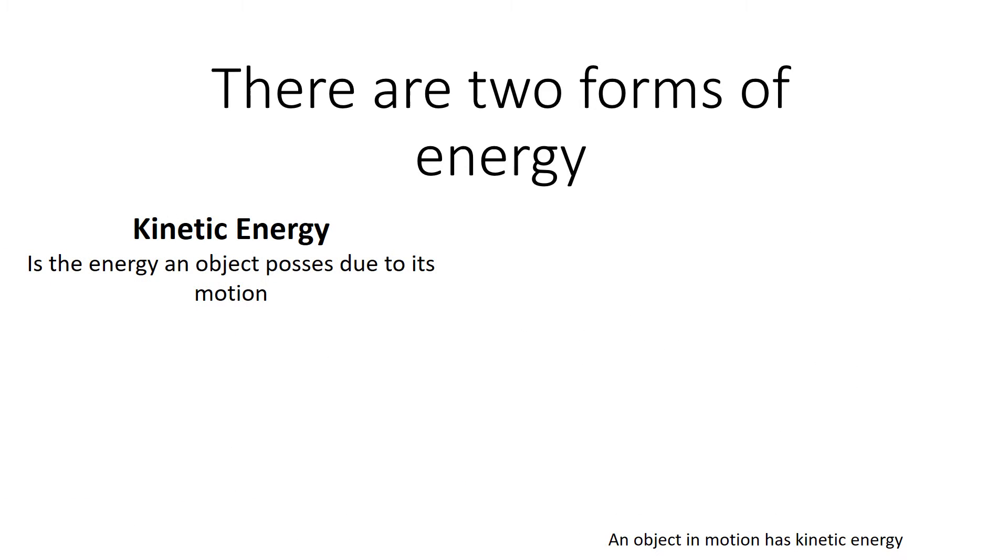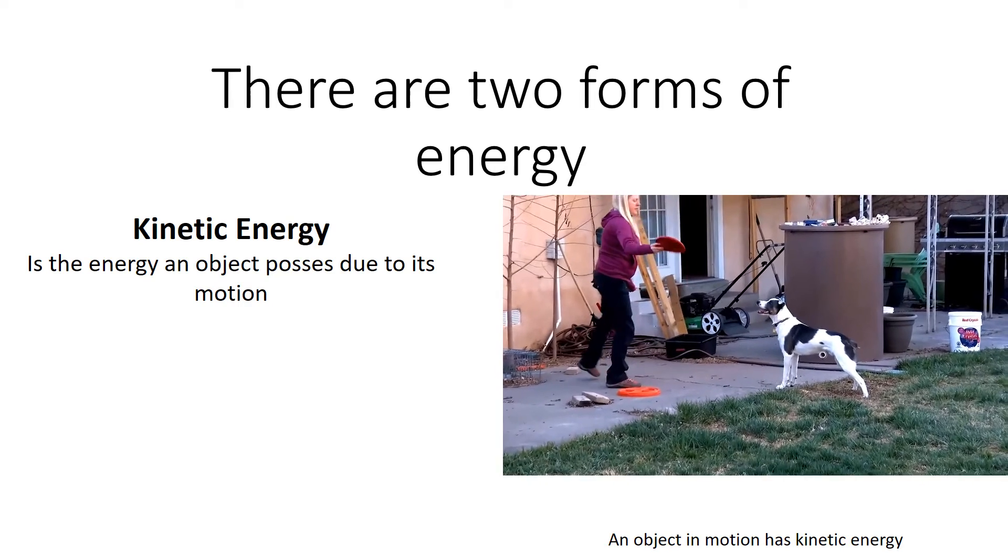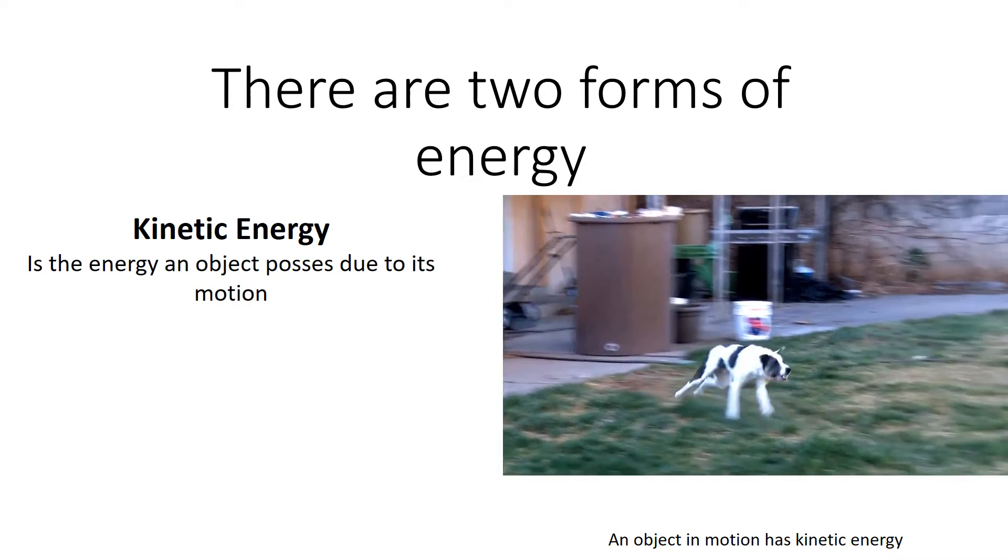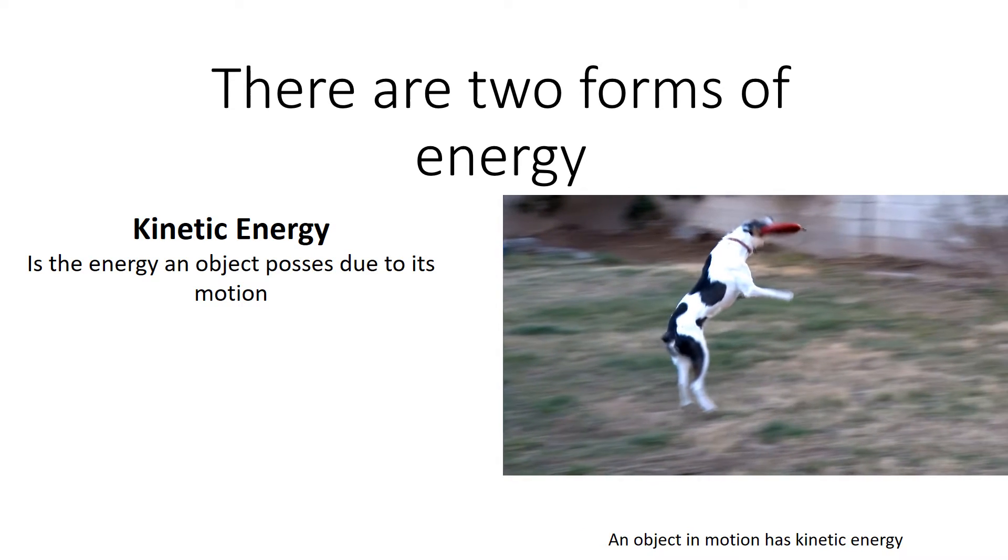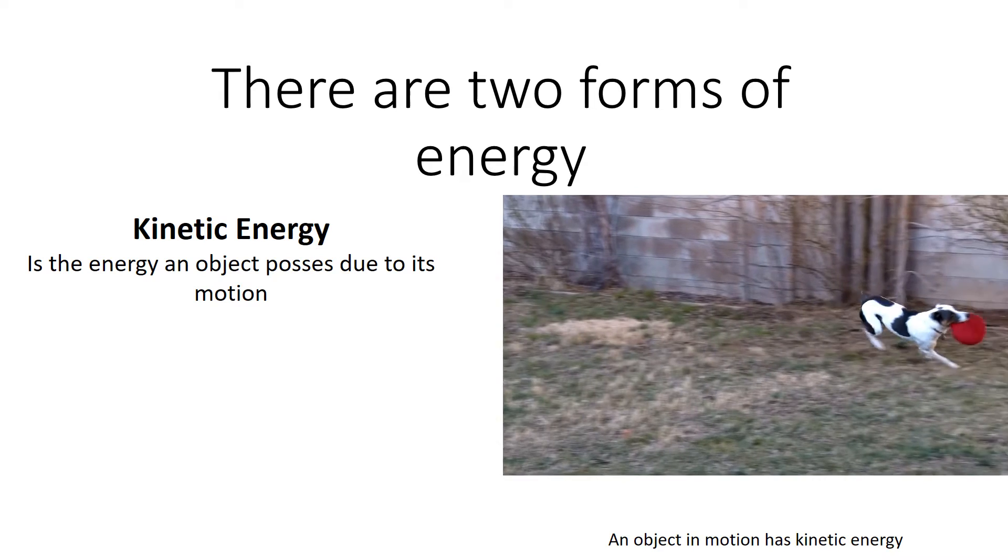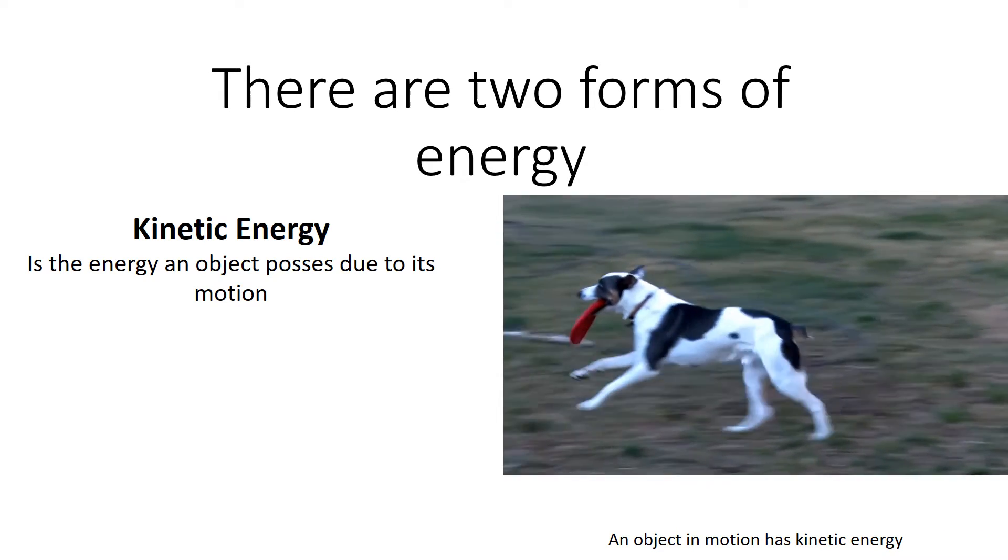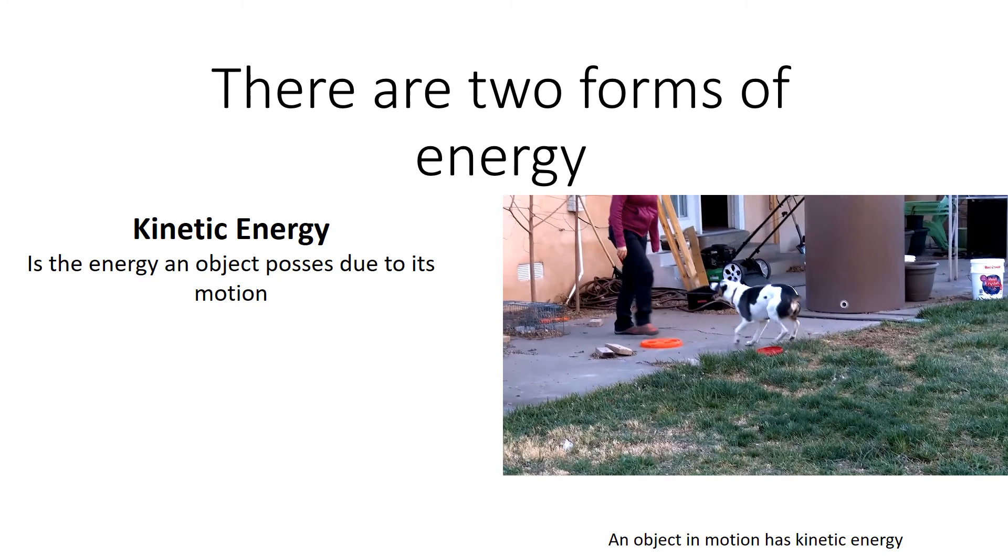So kinetic energy, that is the energy an object possesses due to its motion. So an object in motion will have kinetic energy. What that means is whenever my dog starts chasing the frisbee, he has kinetic energy. So watch his kinetic energy as he catches the frisbee. That's a lot of kinetic energy. I had to slow that down, and of course, it made for some interesting special effects as he was moving so fast.